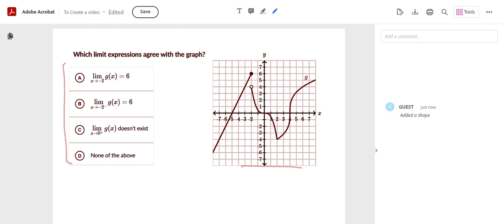So we're going to first look at A. A says the limit as x approaches negative 2 of function g of x is equal to 6. So we have to check the graph for this. As you can see, it says x approaches negative 2. So we're going to be going on the x-axis and we're going to find negative 2.